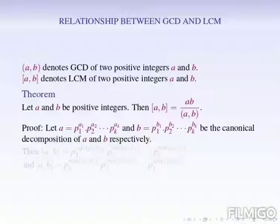First we have to consider the canonical decomposition of the two positive integers a and b. The canonical decomposition of a equals p1^a1 times p2^a2 times ... times pk^ak.